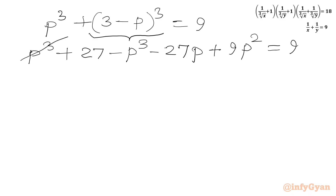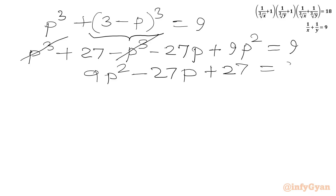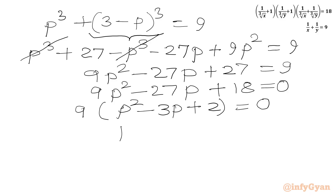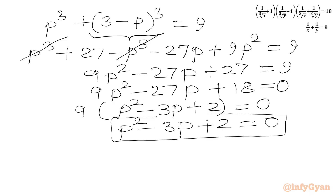We cancel plus P cube and minus P cube. We get 9P squared minus 27P plus 27 equal to 9. Taking all terms to the LHS: 9P squared minus 27P plus 18 equals 0. Taking 9 common: P squared minus 3P plus 2 equals 0. Factorizing: (P minus 1)(P minus 2) equals 0.